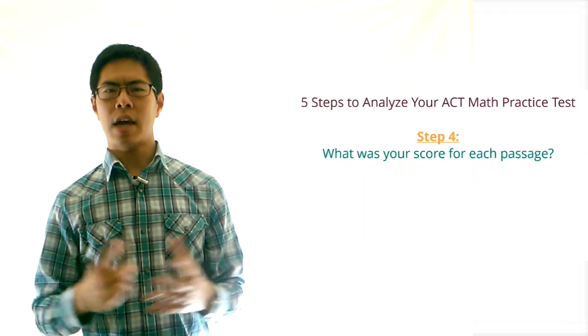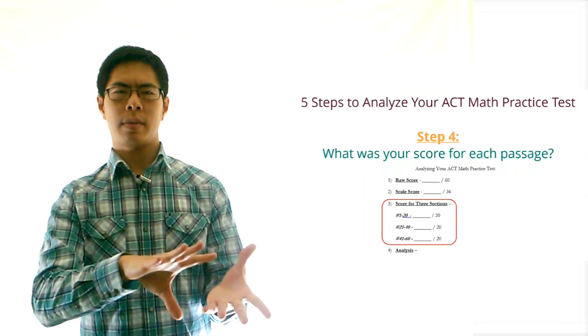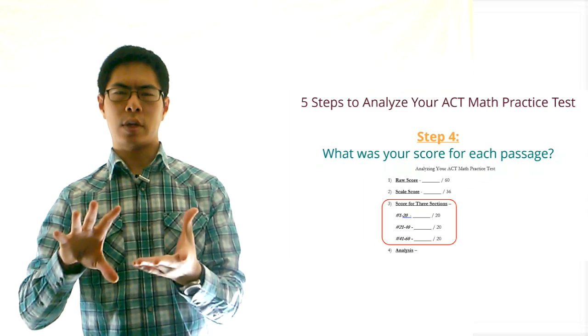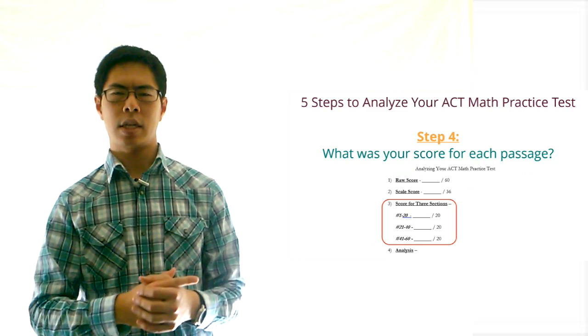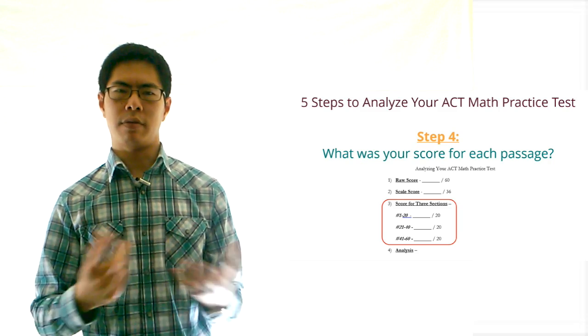Step 4. Divide the math test into three sections: questions 1 through 20, questions 21 through 40, and questions 41 through 60. Now count up how many questions you missed for each of these three sections and write down your score out of 20 for each section.